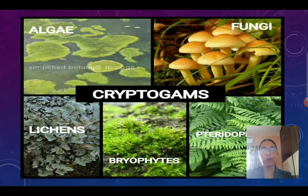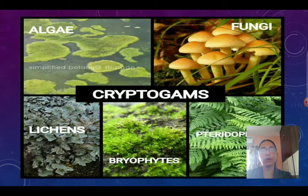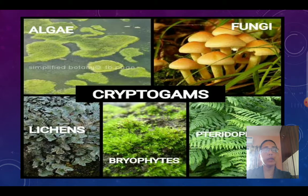Thallophyta are algae, which are found in water or in places with a large amount of moisture. Wherever water is settled or stagnant, you will find algae growing there. All these algae are included in thallophyta. Their body is a thallus — thallus means ribbon-like or flat.